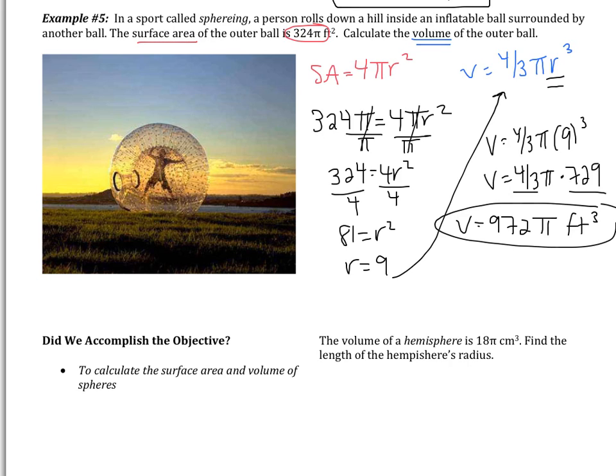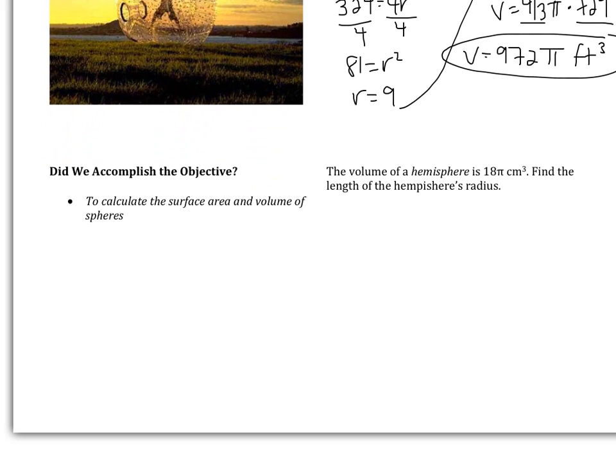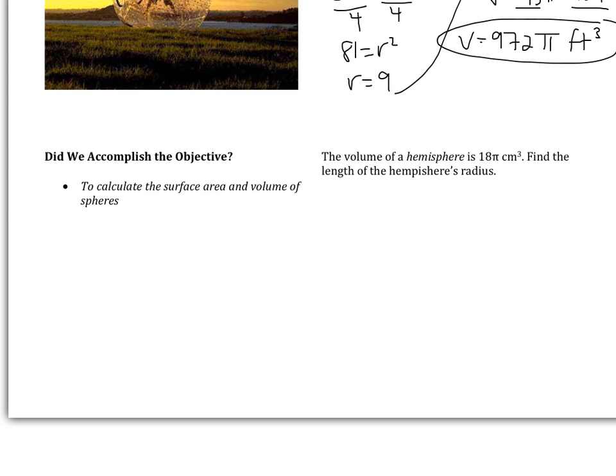So hopefully you got that one right. This has brought us to the end of the video. Our objective was to calculate surface area and volume of spheres. So per normal, you have one problem to do on your own to show me that you understood what you're doing. It says the volume of a hemisphere is 18 pi. Find the length of the hemisphere's radius. So you may need to go back in the video or look back in your notes to look at what is a hemisphere. When you come to class tomorrow, I will expect this problem to be finished. Please bring any questions that you have to class tomorrow. See you tomorrow.